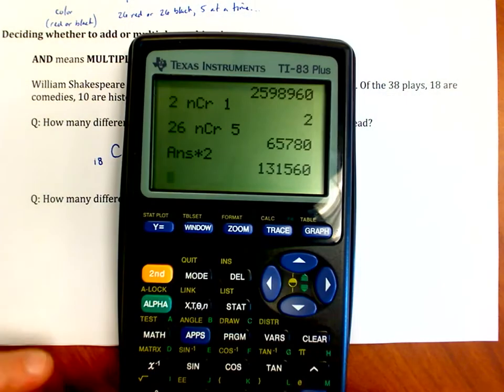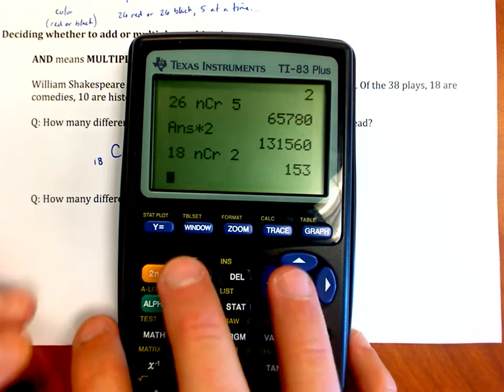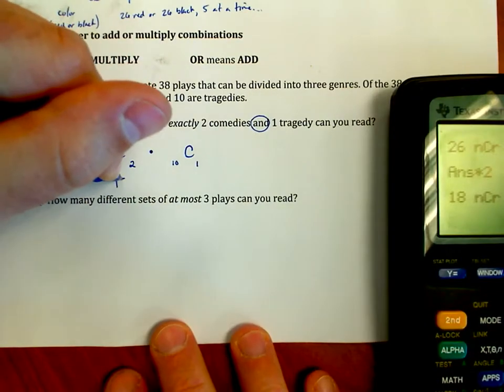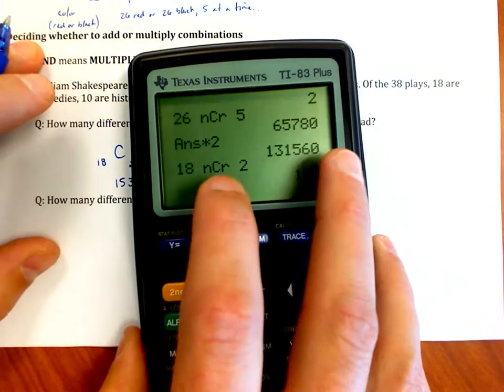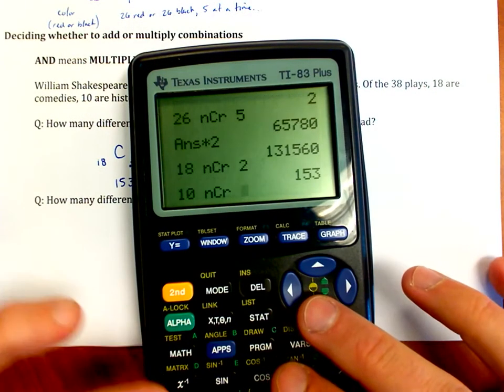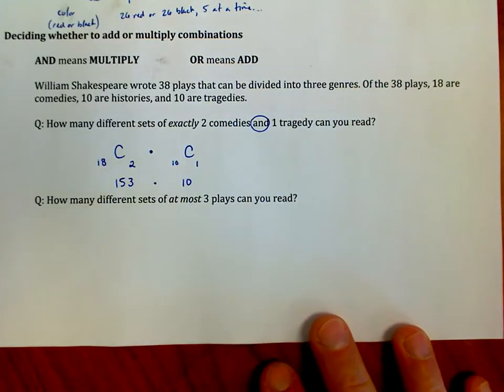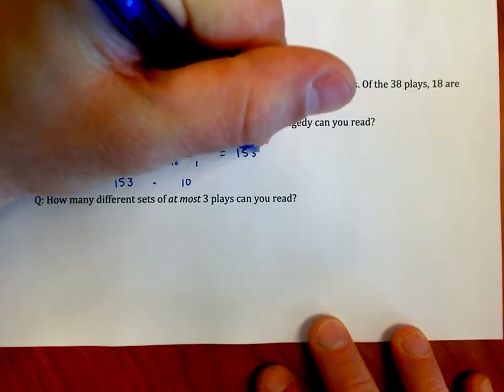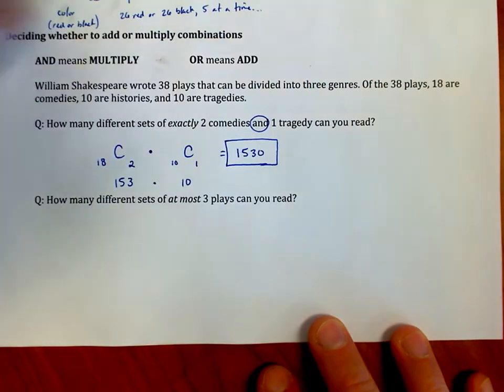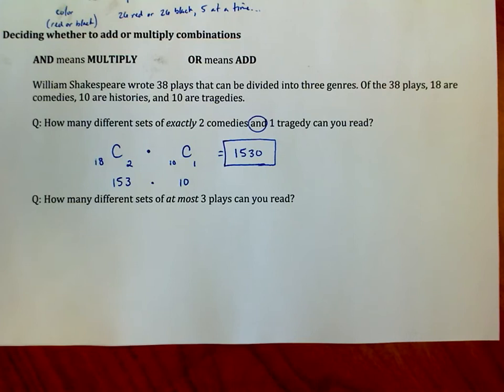And so on my calculator, I'm going to do 18, math menu, NCR, 2. That's 153 different ways. Times, and then 10, NCR, 1. And that's 10. I have 10 choices there. I think that's probably no surprise. And so my answer then is 153 times 10, which is 1,530 different sets of reading that involve two comedies and one tragedy out of Shakespeare's 38 plays.